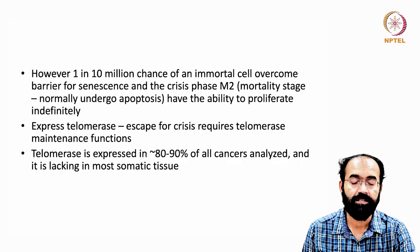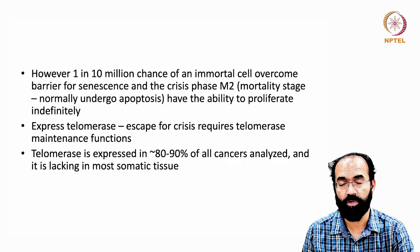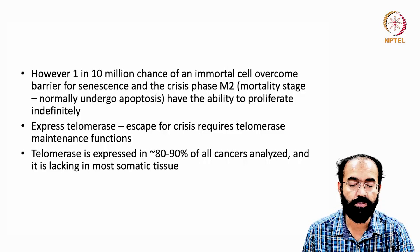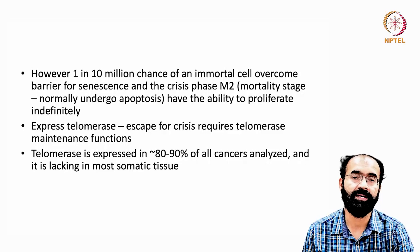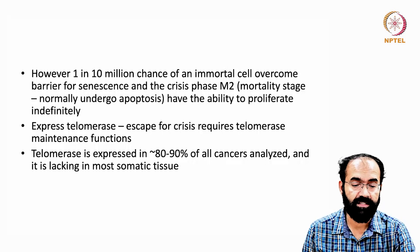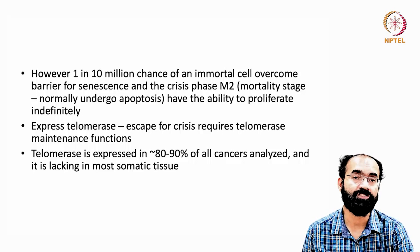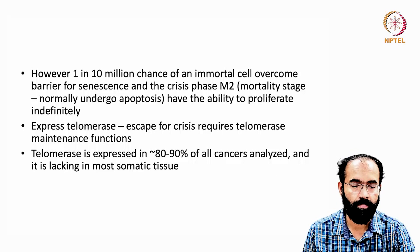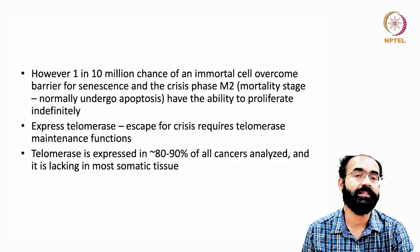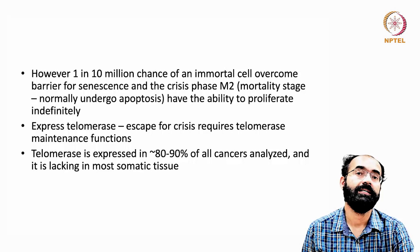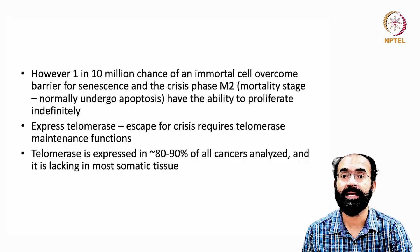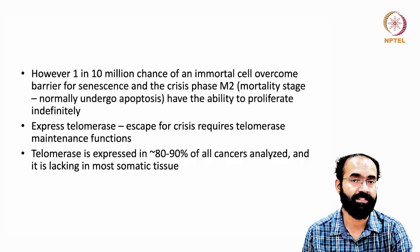If one cell in 10 million has the ability to overcome the senescence barrier and has telomerase activity turned on, it will continue to proliferate indefinitely — this is called immortalization of the cell line. They must express telomerase; there is no other way, because the problem caused by reduced telomere length must be handled by increasing telomere length. They must express telomerase, escape the crisis, and maintain telomerase function, because if expression stops, the cell will again face the Hayflick limit and M2 crisis.